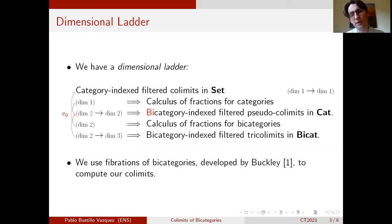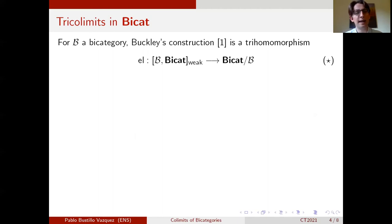So let's dive into what Buckley does. Buckley has a construction that generalizes the notion of Grothendieck construction to dimension two. So it takes a trihomomorphism from a bicategory B to bicats and sends it to some pseudofunctor inside bicats that has the property of being a cofibration.